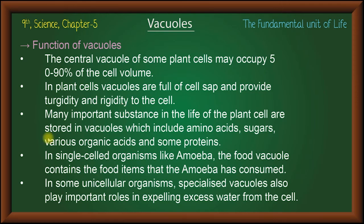Many important substances in the life of plant cells are stored in vacuoles, which include amino acids, sugar, various organic acids, and some proteins.